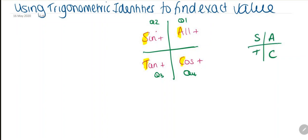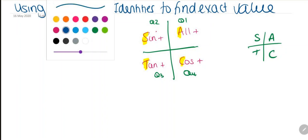So this is going to help us, and this is going counterclockwise. So CAST: C for cosine, A for all, S for sine, and T for tangent. Let's have a look at example 1.